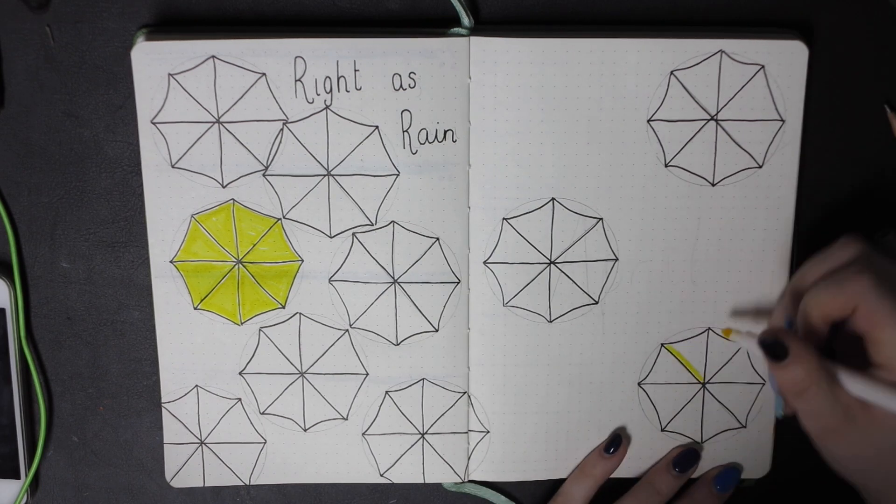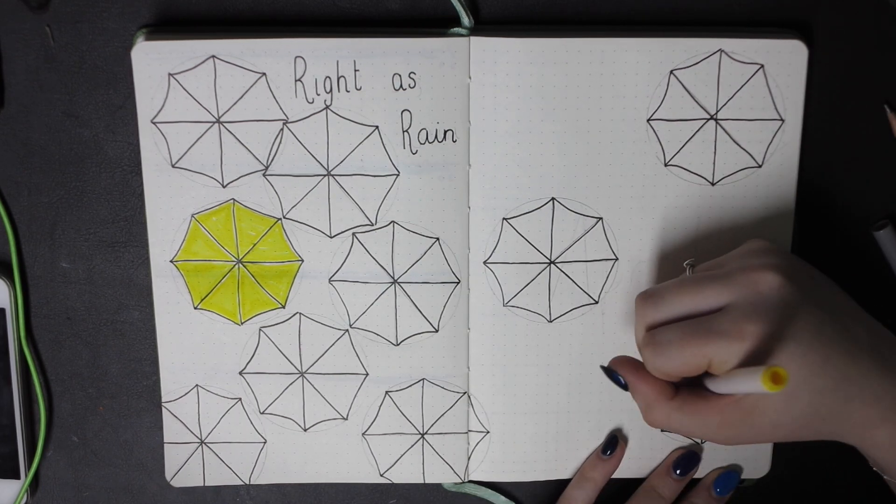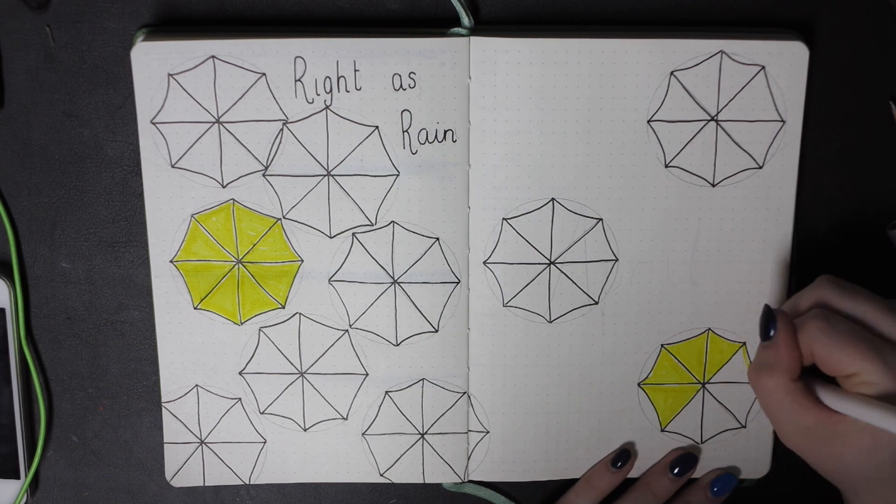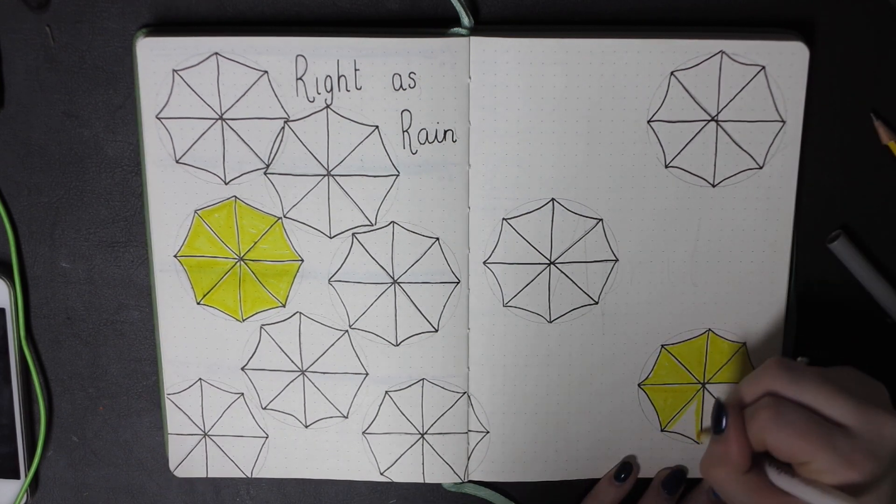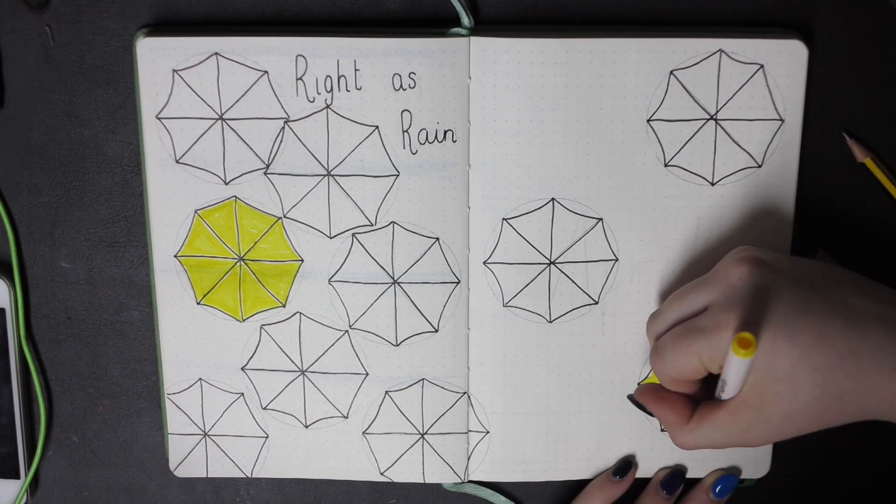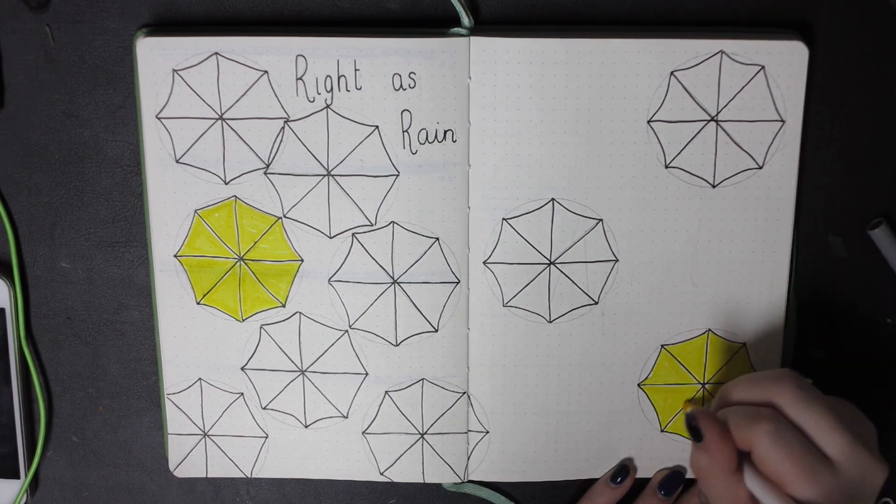I coloured two umbrellas in yellow and the rest of them I did in two different greys. Then I did three umbrellas with both shades of grey on them just to make it a bit more interesting to look at.